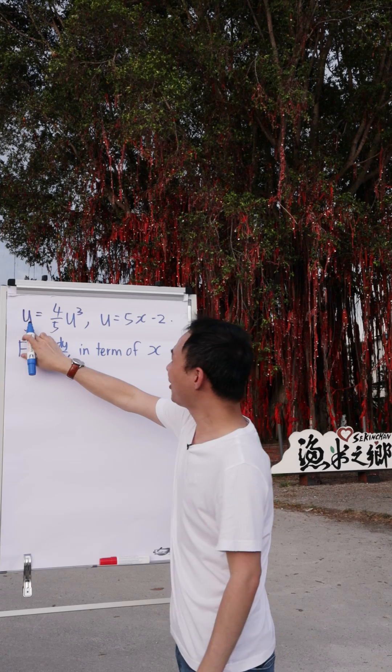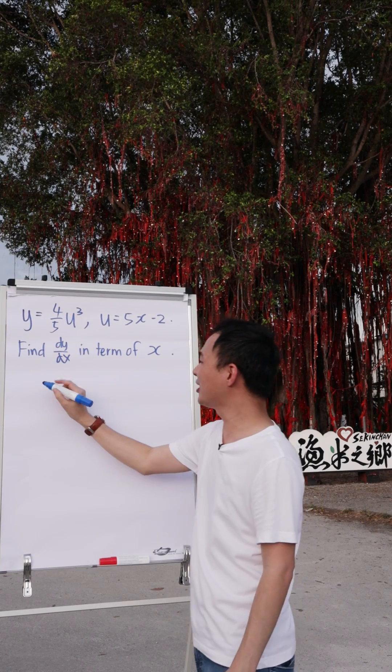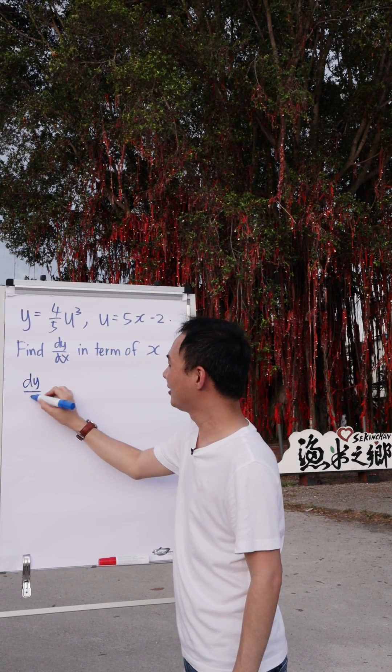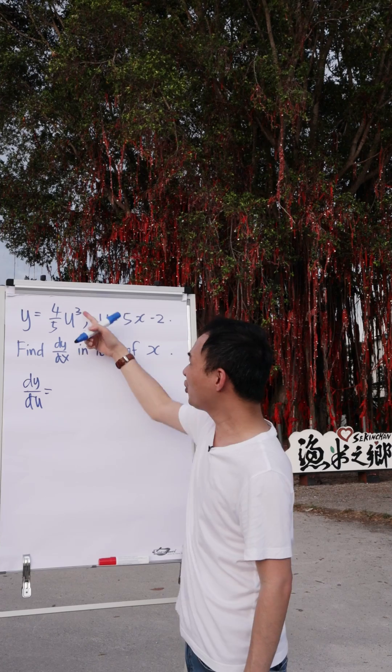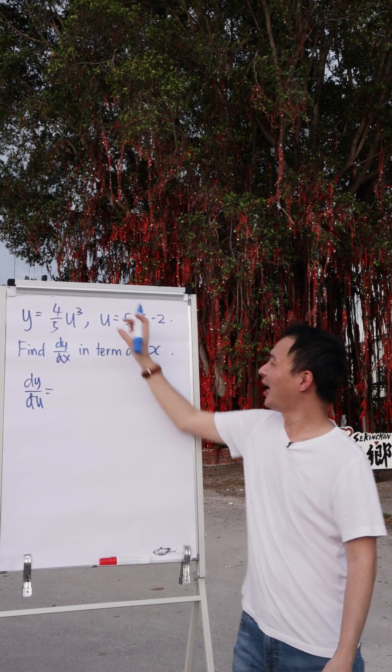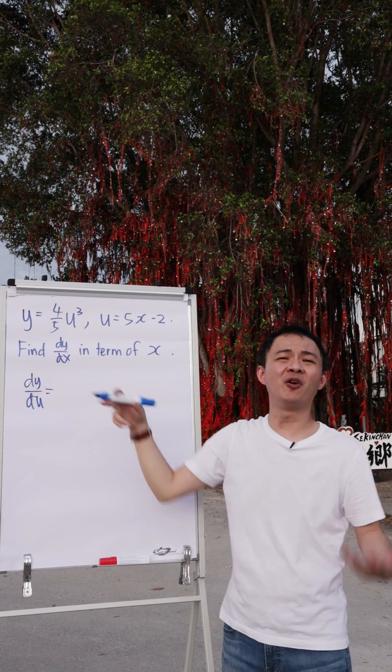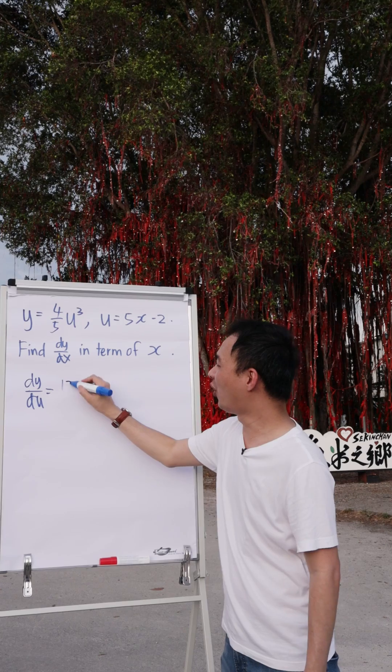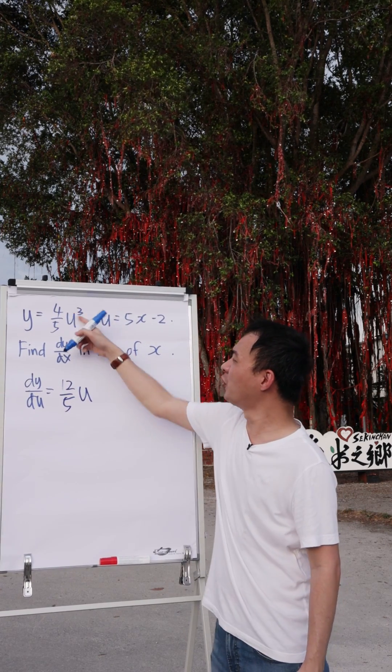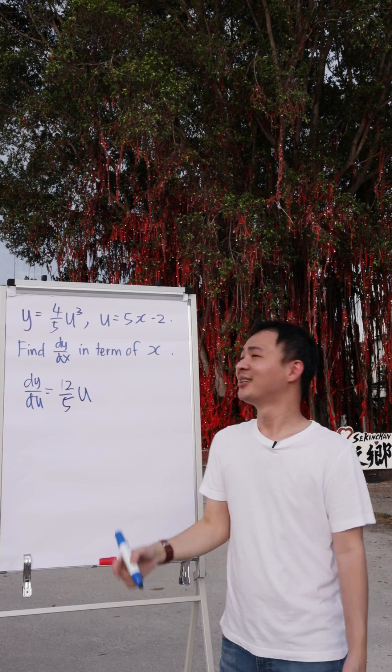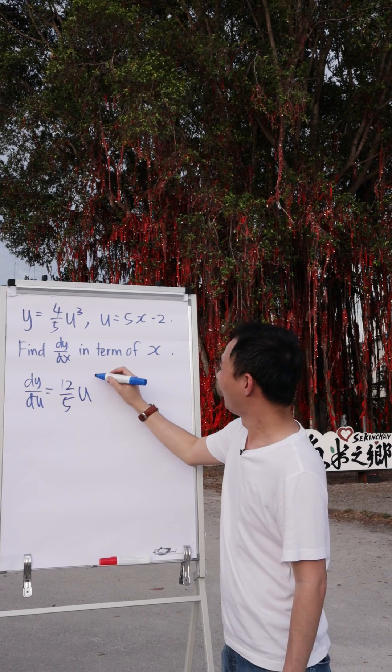So over here, if I differentiate y in terms of u, this one is called dy/du. I can straight away differentiate this one because it's quite easy. I move the 3 to the front, multiply with 4 over 5, then I will get 12 over 5. And then u over here, because you move to the front, you need to minus 1, isn't it? Then you will get u to the power of 2.